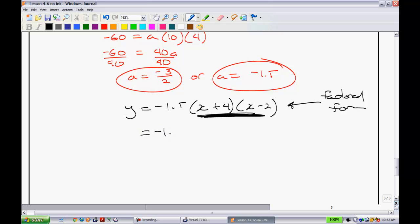So, the first thing I'll do is my FOIL. So, FOILing this out, I have x times x gives me x squared. x times -2 is -2x. 4 times x is plus 4x. 4 times -2 is -8.